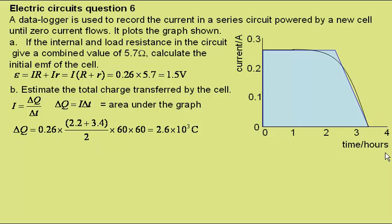Not forgetting that my time is in hours, so I need to multiply this by 60 to get it into minutes, and multiply it by 60 again to get it into seconds, giving a charge transferred of 2.6 times 10 to the 3 coulombs.